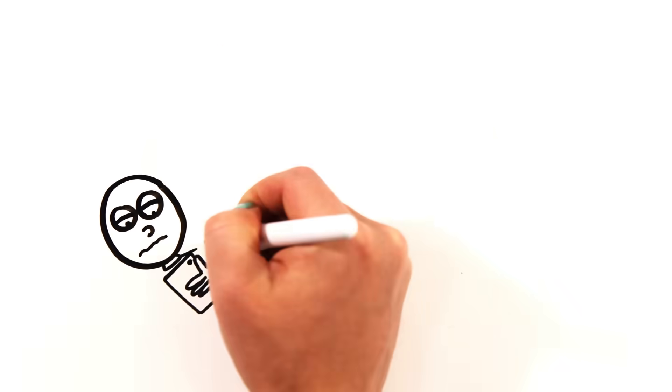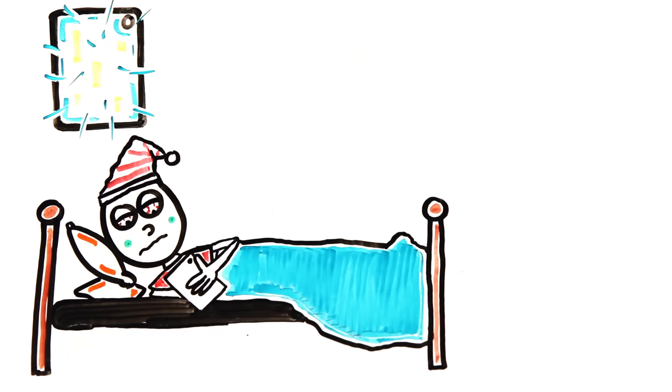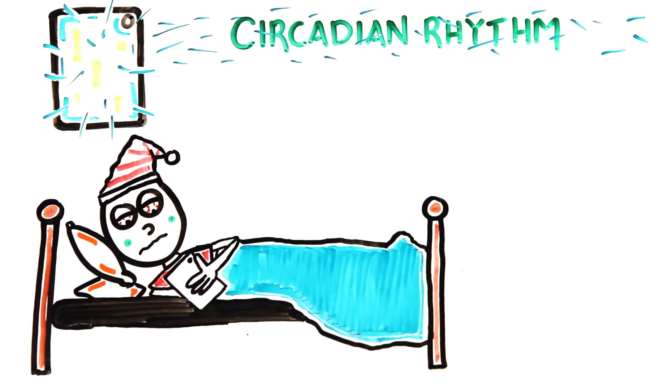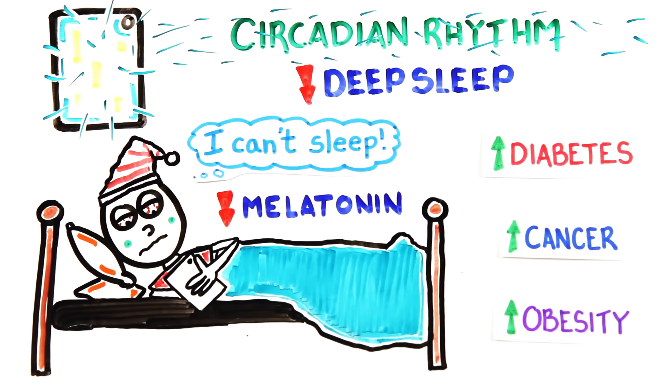Your smartphone can also disrupt your sleep. The screen emits a blue light, which has been shown to alter our circadian rhythms, diminishing the time spent in deep sleep, which is linked to the development of diabetes, cancer and obesity. Studies have shown that people who read on their smartphone at night have a harder time falling asleep and produce less melatonin, a hormone responsible for the regulation of sleep-wake cycles.